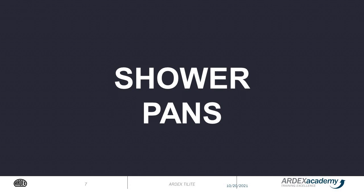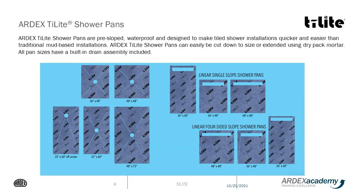Let's talk about the shower pans. ARDEX TileLite shower pans are manufactured here in the U.S. They are all pre-sloped and waterproofed, and they're designed to make installations quicker and easier than traditional mud bed installations. The standard sizes will be available for purchase from your ARDEX distributor. The pans are made from an extremely dense and strong graphite-infused foam. The pans also have a built-in drain assembly making plumbing connections a breeze. All the pans are waterproofed with a sheet membrane that is bonded to the pan with ARDEX 8+9 liquid waterproofing.